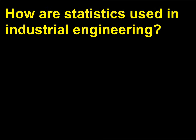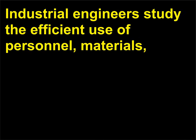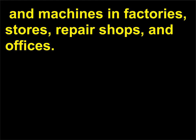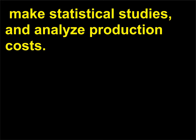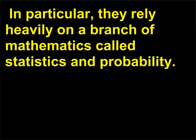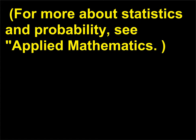How are statistics used in industrial engineering? Industrial engineers study the efficient use of personnel, materials, and machines in factories, stores, repair shops, and offices. They prepare layouts of machinery and equipment, plan the flow of work, make statistical studies, and analyze production costs. In particular, they rely heavily on a branch of mathematics called statistics and probability.